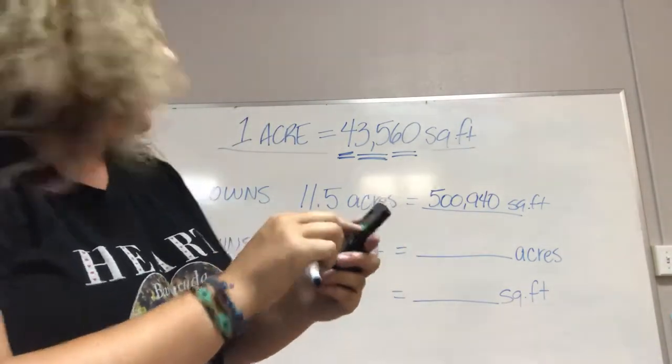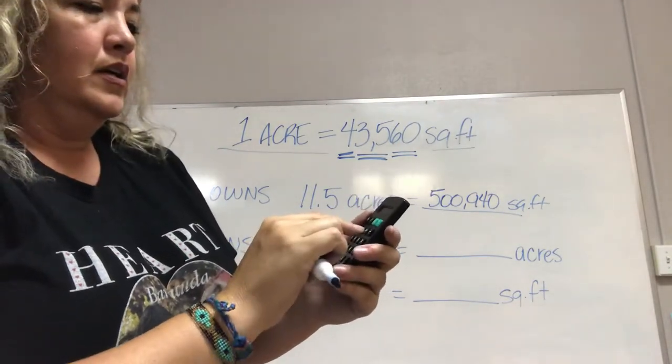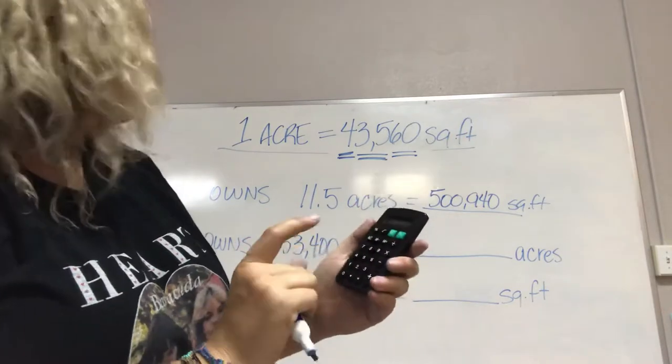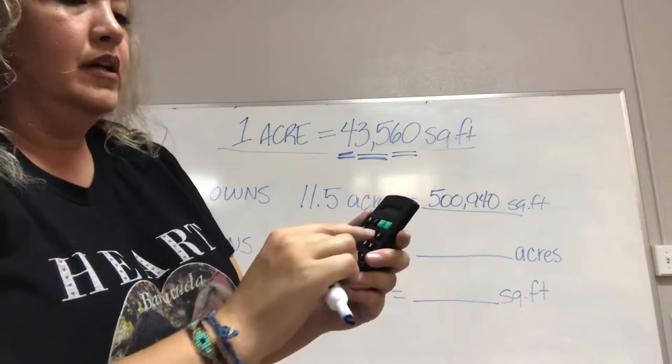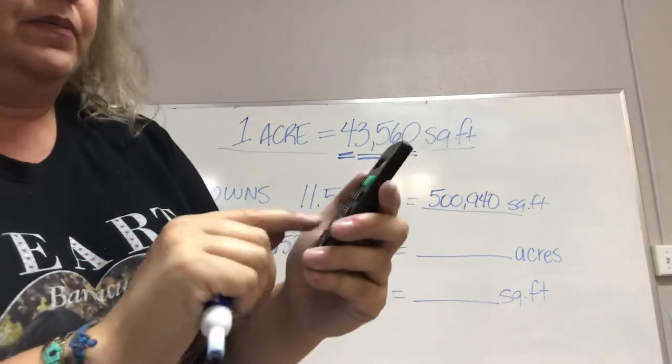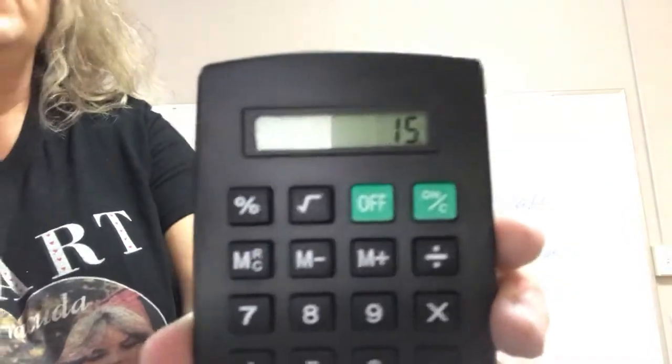Okay, so 653,400 divided by 43,560. Ooh, he owns 15 acres.